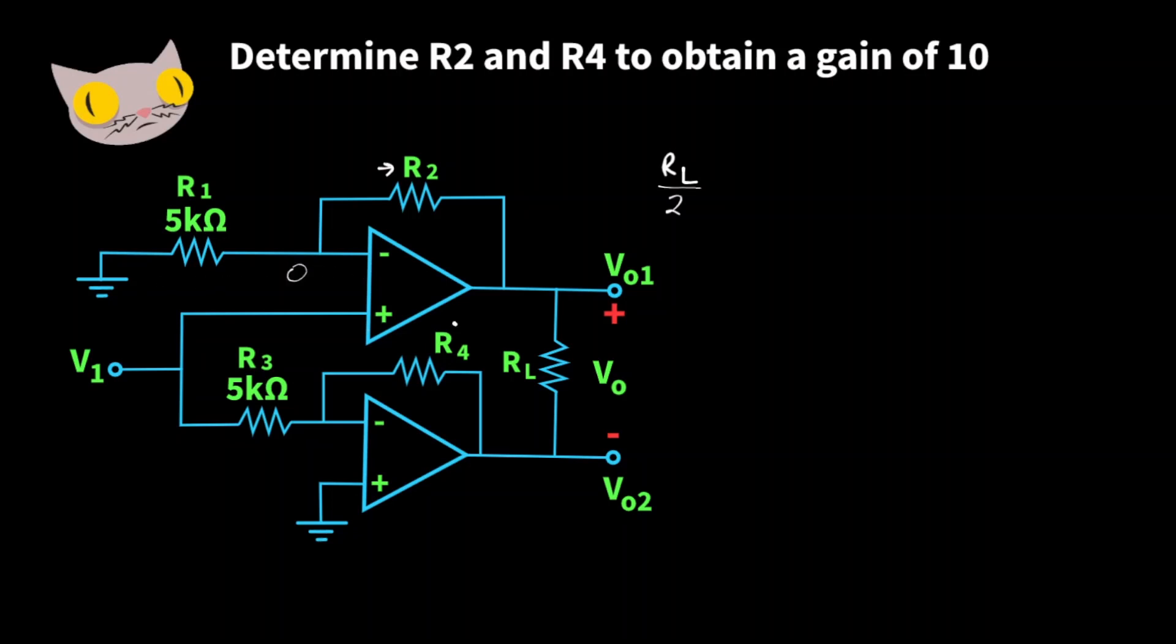This top op amp is a non-inverting amplifier. So the gain expression is Vout over V1, our input voltage, is equal to 2 times 1 plus R2 over R1, and that's giving us a gain of 10. We know R1 is 5k ohms, and now we can solve for R2.